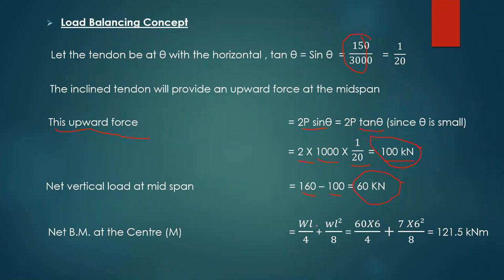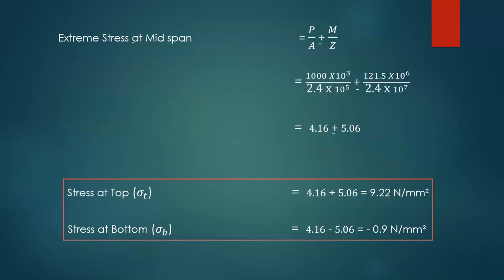Now calculate the bending moment: due to net point load WL/4, plus self-weight of beam WL²/8, where self-weight = 7 kN/m. After putting in values, bending moment = 121.5 kN·m. Putting this into the formula P/A ± M/Z gives direct stress and bending stress. Stresses at top and bottom fibres are 9.22 N/mm² and −0.9 N/mm² respectively — the same result.